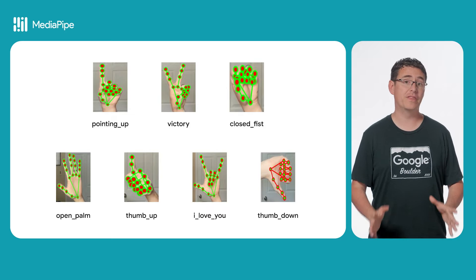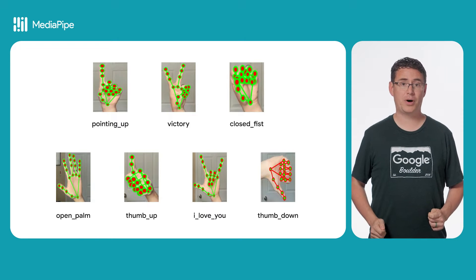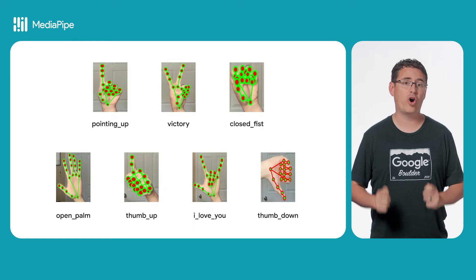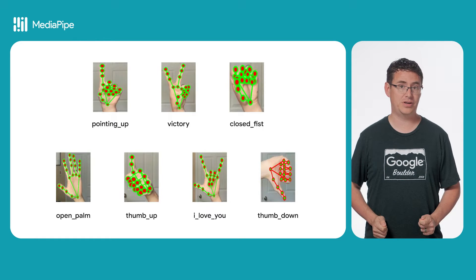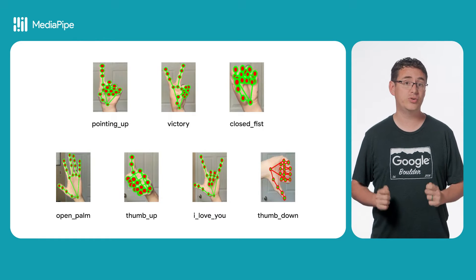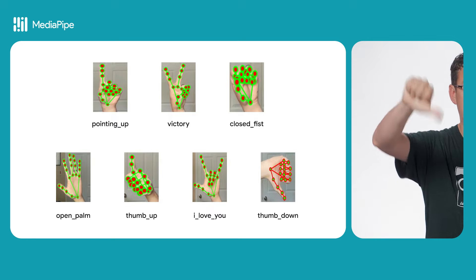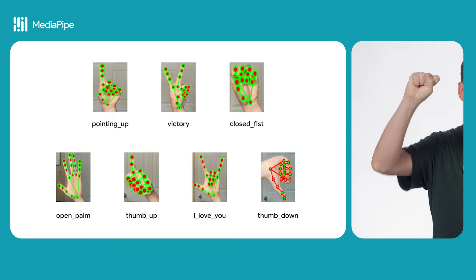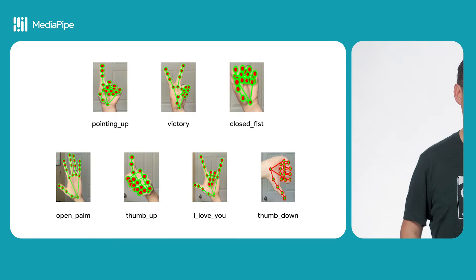For this video, I'm going to use a default gesture classification model that we have already built and tested for our developer community, which gives you easy access to gestures including thumbs up, thumbs down, close fist, and open palm.